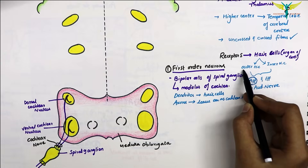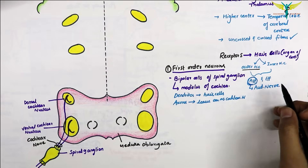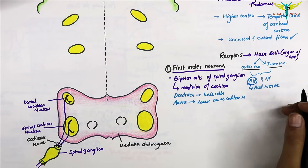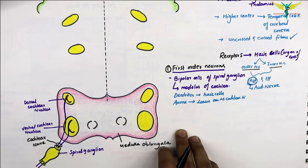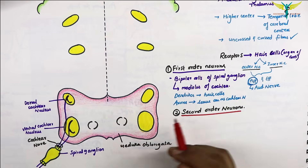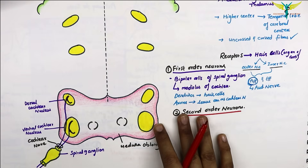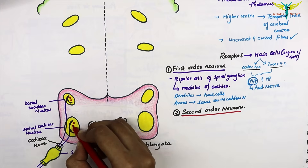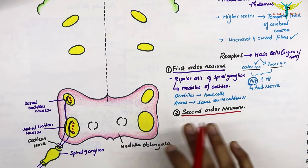The efferent nerve fiber of the outer hair cell terminates directly onto the cell body and controls the motility of this cell. The efferent nerve fiber to the inner hair cell terminates onto the afferent nerve where it leaves the inner hair cell and controls the impulse output from this hair cell. The neurons of the dorsal and ventral cochlear nuclei in the medulla oblongata form the second order neurons of the auditory pathway, whose axons run in four different groups.